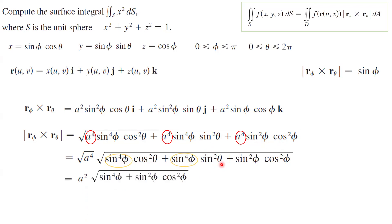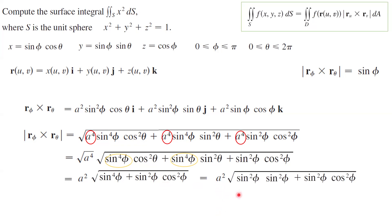After factoring, we get a² times the square root of sin⁴(φ) + sin²(φ)cos²(φ). This can be rewritten as a² times the square root of sin²(φ)·[sin²(φ) + cos²(φ)], which equals a² times the square root of sin²(φ), giving a²·sin(φ). Since a = 1, this becomes simply sin(φ), as shown.